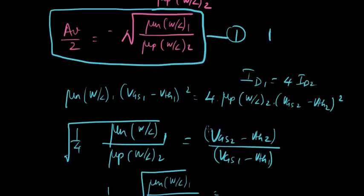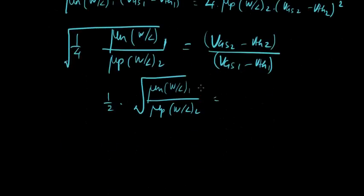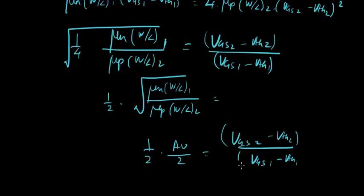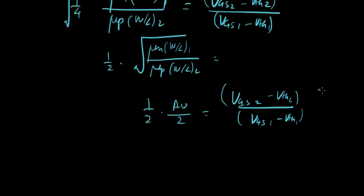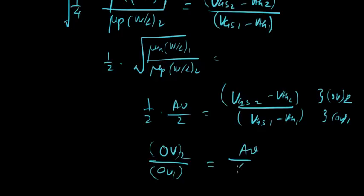But what is this term equal to from here, from equation 1? It is Av over 2. Forget the minus sign for now. So it's Av over 2. So half times Av over 2 equals VGS2 minus VTH2 over VGS1 minus VTH1. Let's just call this overdrive 2 and let's just call this overdrive 1. So OV2 over OV1 is now Av over 4.